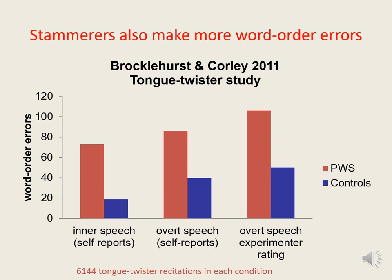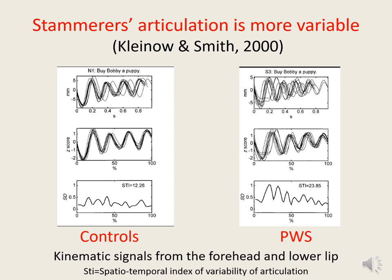In light of the findings from brain imaging studies discussed in the previous slideshow, it would not be at all surprising to find that, in addition to making lots of categorical errors, the general accuracy or precision with which stammerers articulate their words is lower than that of non-stammerers. There are now a number of studies whose findings suggest that the articulatory abilities of adults who stammer are less well developed than those of normally fluent speakers.